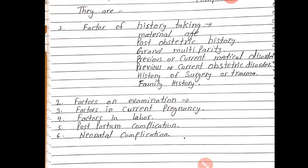Then fourth factor: factors in current pregnancy. Jo bhi uski current pregnancy hai usmein kya kya dekhenge — anemia, multiple pregnancy (twins to nahi hai), preterm labor ya premature rupture of membranes, abnormal presentation and position of fetus (face, brow, breech, ya shoulder presentation), and contracted pelvis.